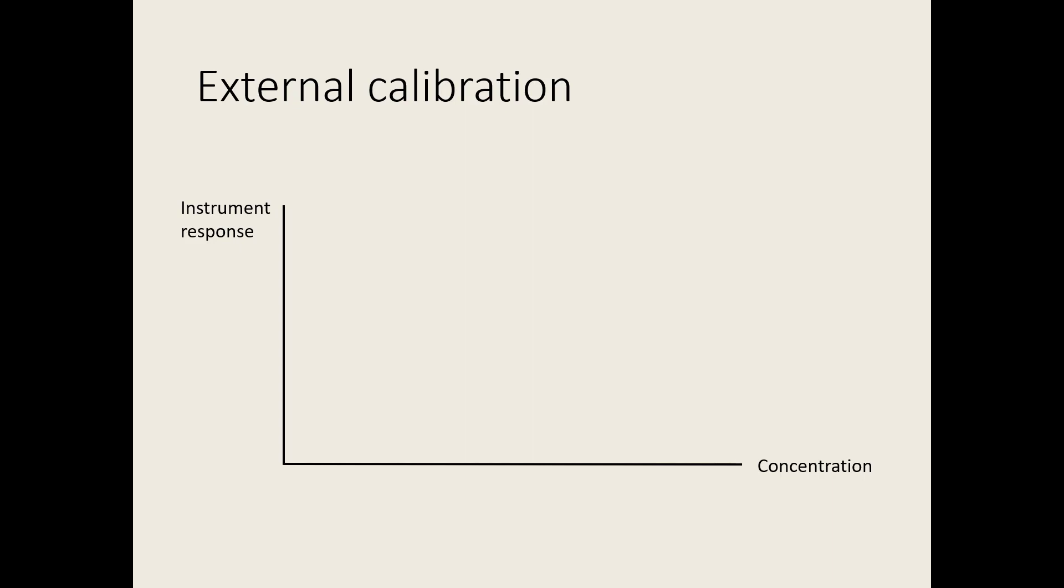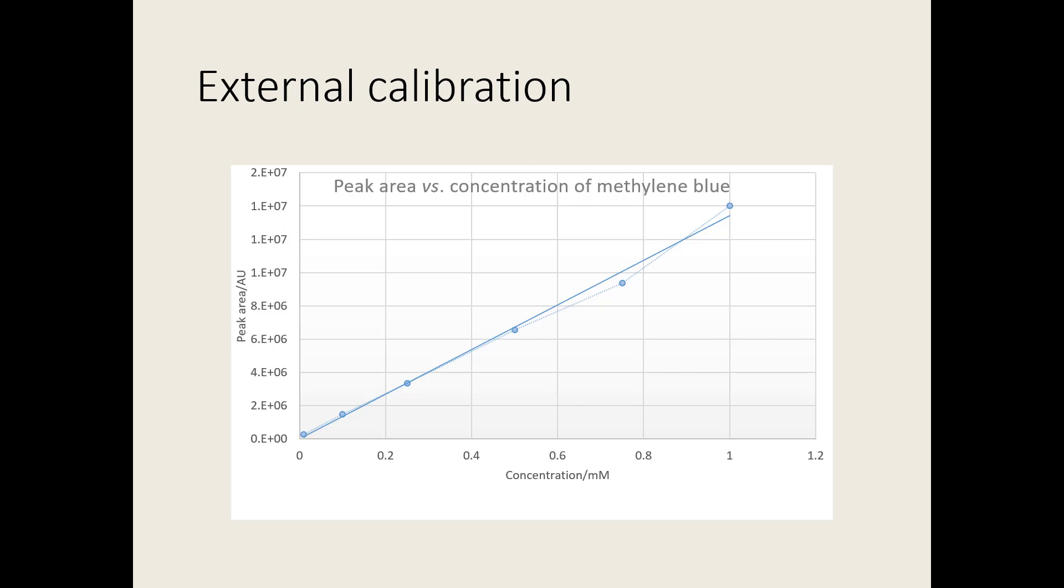The data points for the known concentrations are then plotted and a line of best fit or regression line is added. If we plot the graph of the data from our experiment, we get a straight line. A regression line has been added using the add trend line feature in Excel. This can also be added manually if you've plotted your graph by hand.